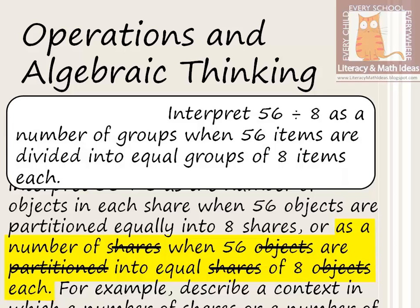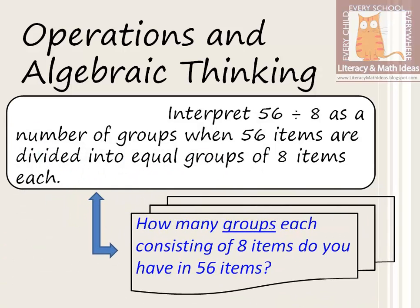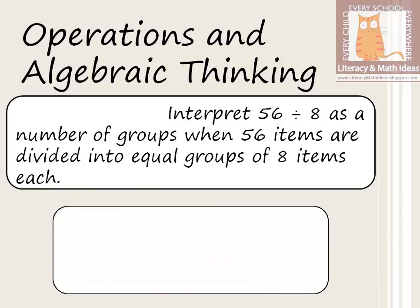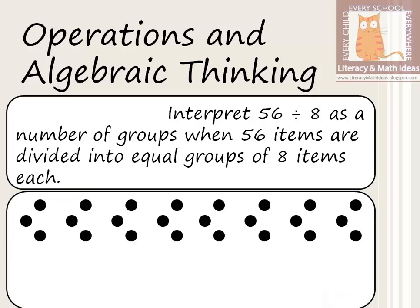In the first approach we are concerned with the number of items in each group. However, in this second approach, we are concerned with the number of groups where each group has 8 items. This approach answers the question: how many groups consisting of 8 items do you have within the 56 items?